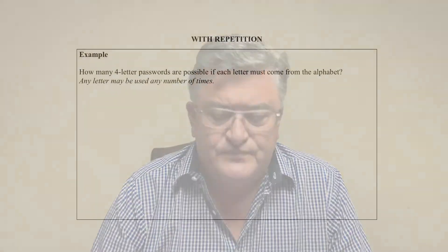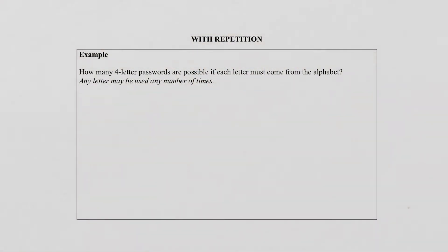So let's look at an example to see what this means. In this example you will see it says how many four letter passwords are possible if each letter must come from the alphabet. Any letter may be used any number of times and this is the crucial part in this problem. Because this means it is with repetition. It means those letters may repeat.